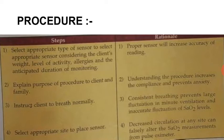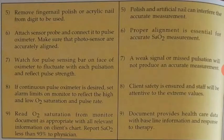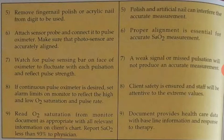Fourth step: select appropriate site to place sensor। Fifth: remove finger nail polish and acrylic nails from the digit to be used। Sixth: attach sensor probe and connect it to the pulse oximetry machine। Make sure the photo sensors are accurately aligned।